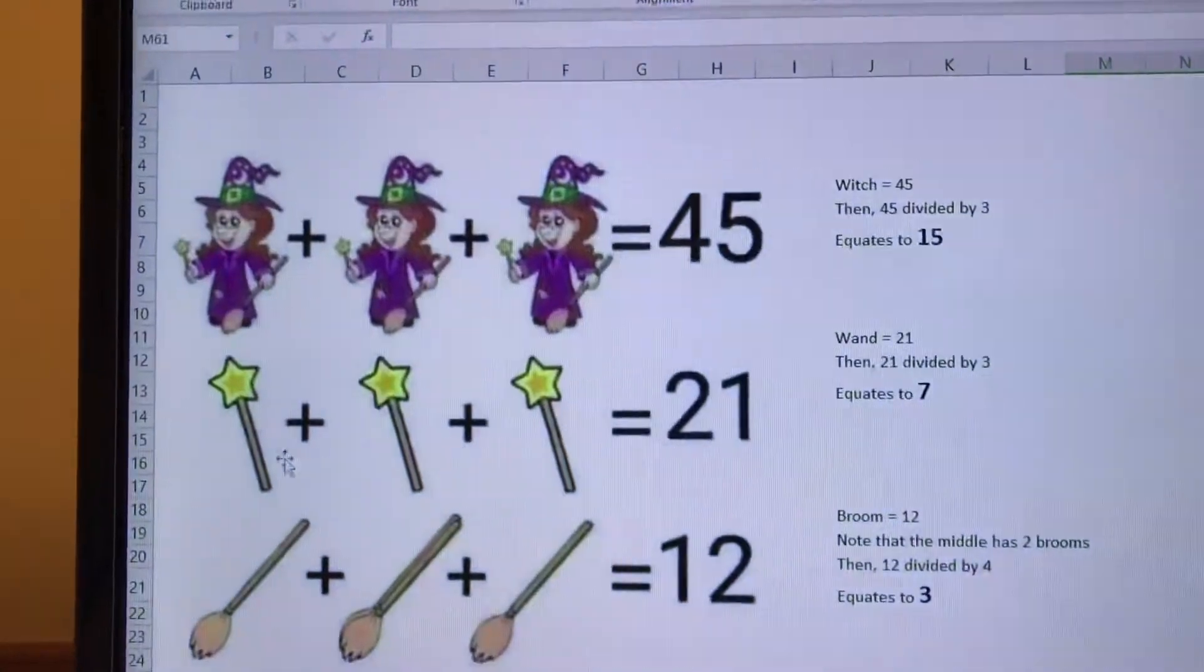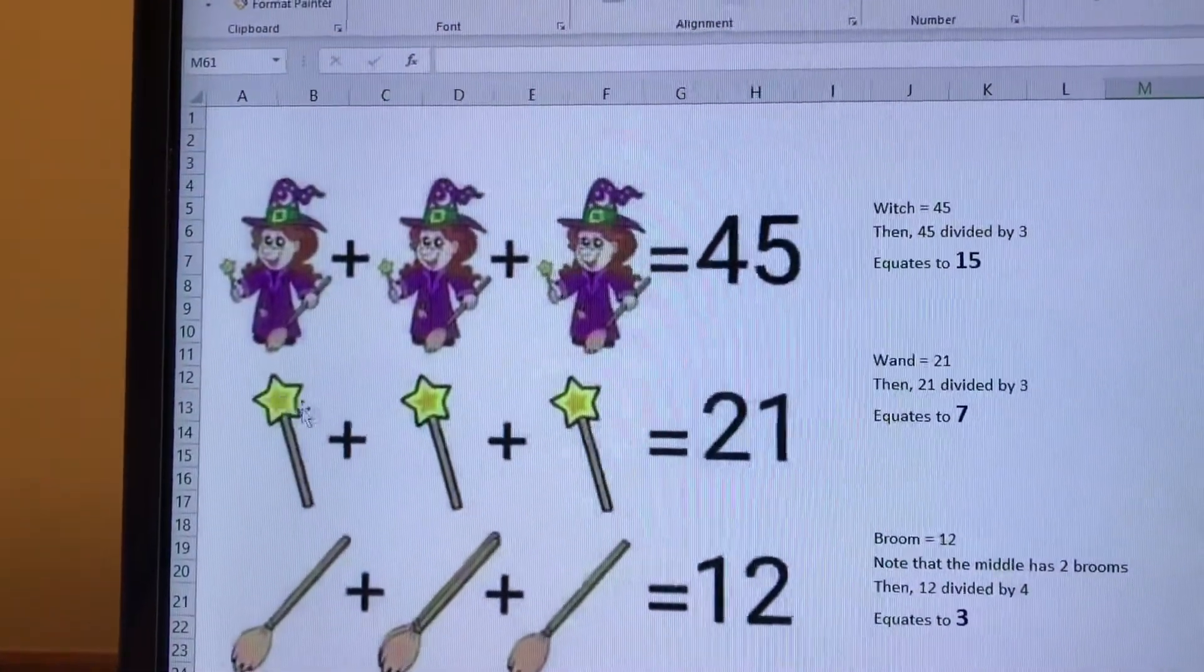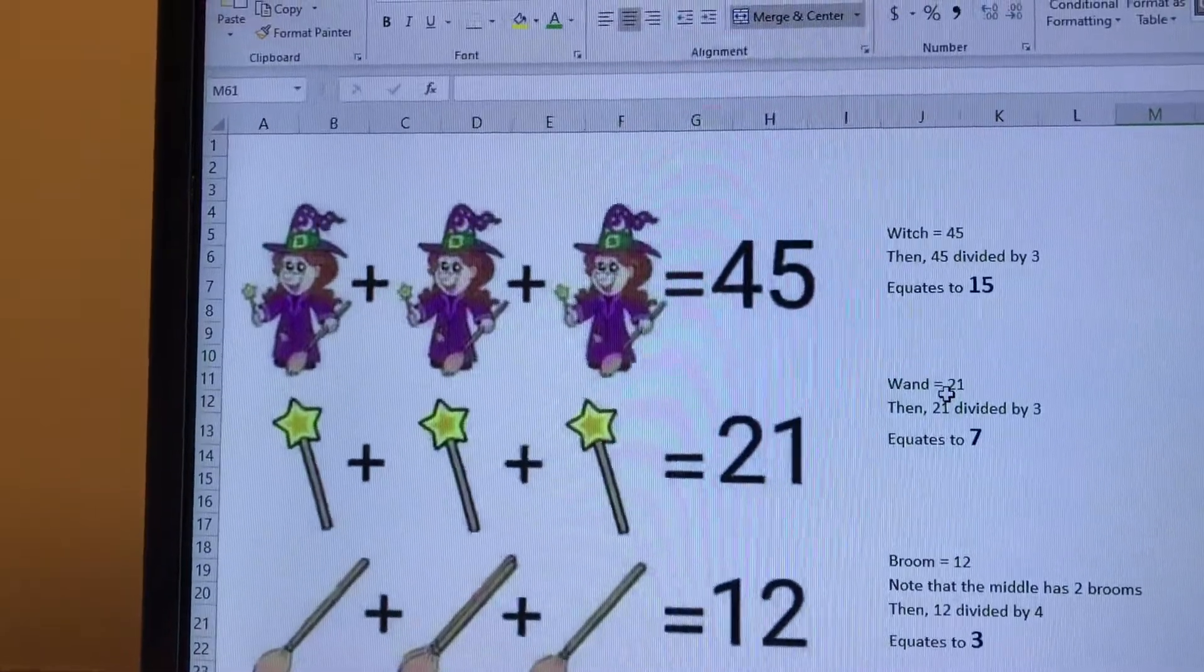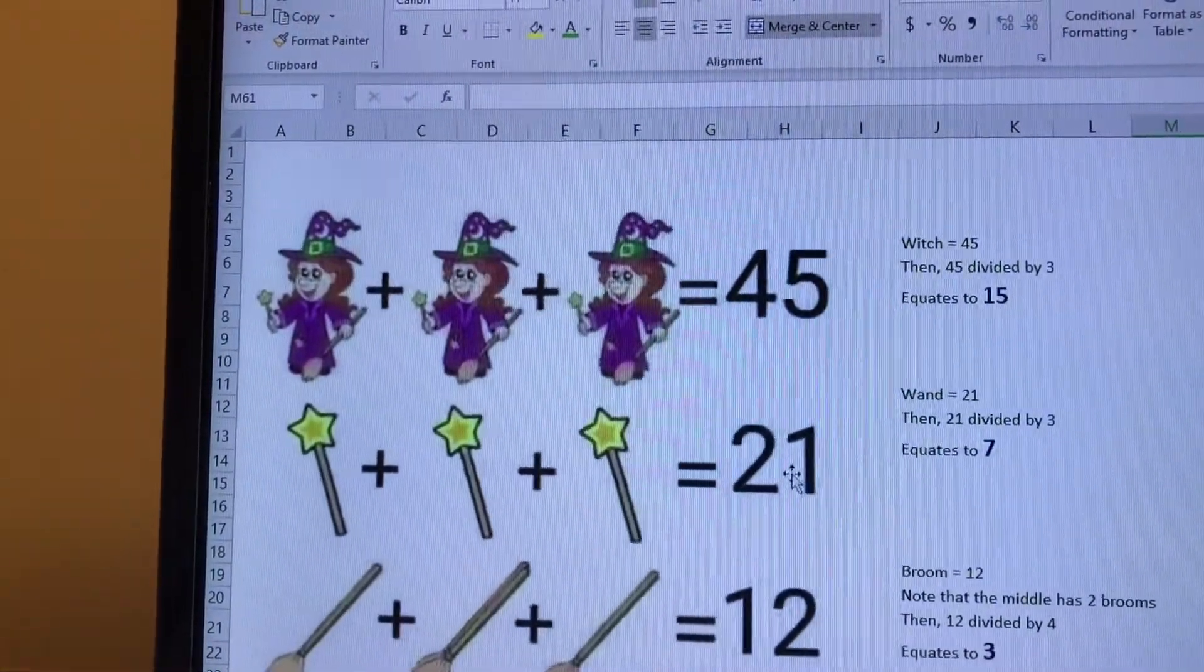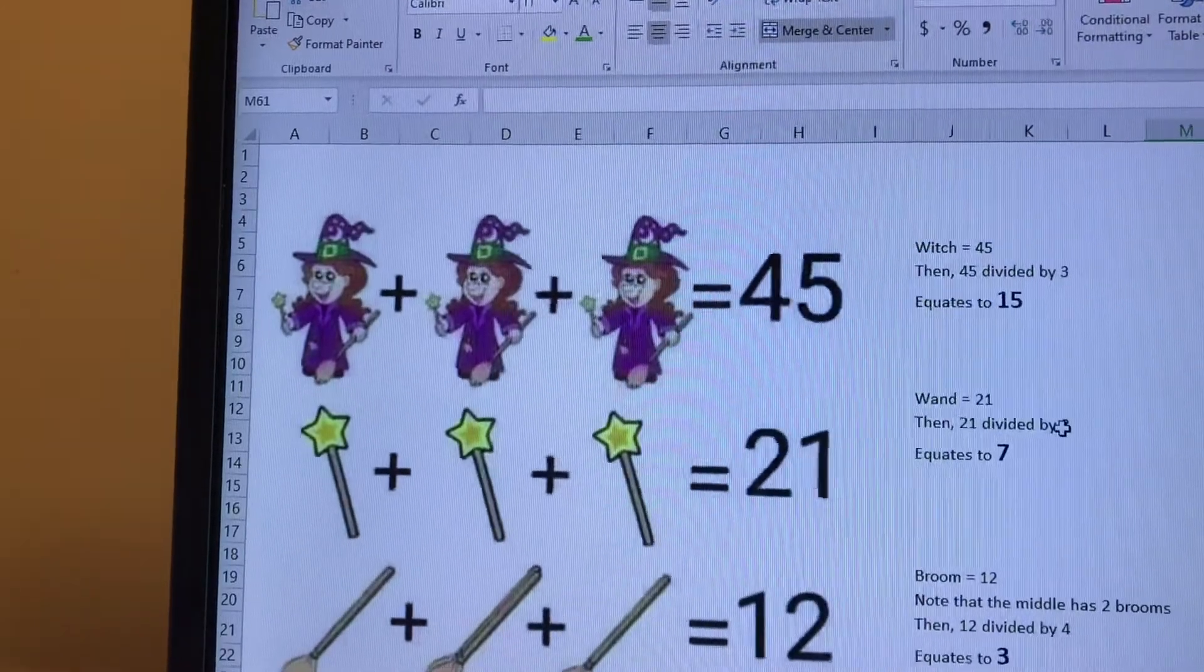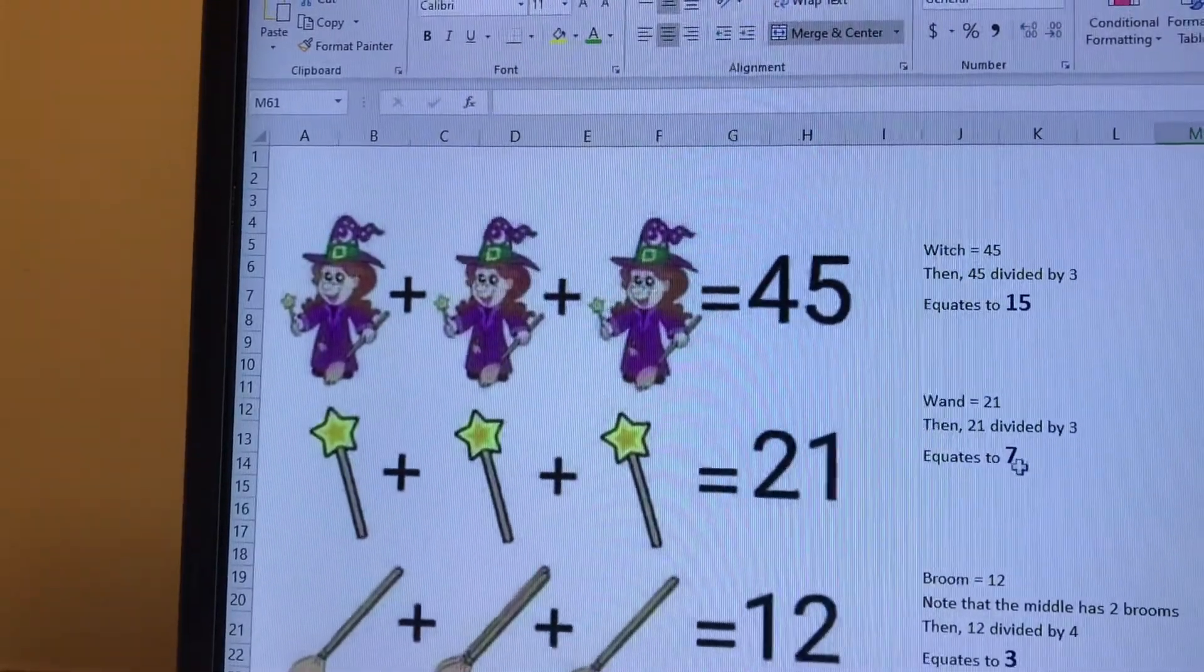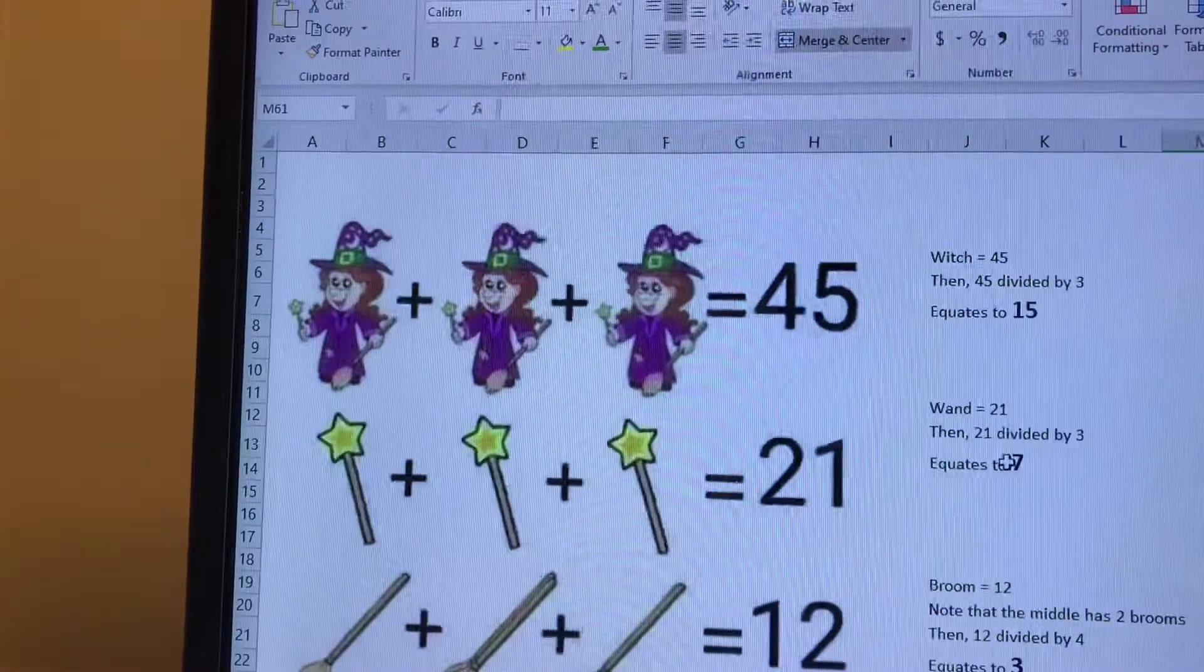The next one is the wand. You see 1, 1, 2, 3 - same total of 21. And then I divided by 3, so 21 divided by 3 is equal to 7.